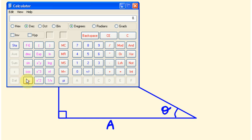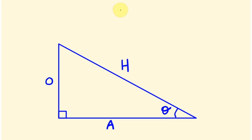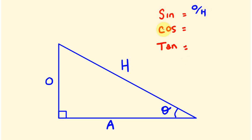We're going to be using these three trigonometric functions - sine, cos, and tan. The functions and ratios are as follows. The way I remembered it was this little mnemonic called "some old hags can't always hack their old age." Some old hags can't always hack their old age.